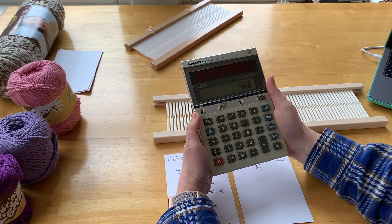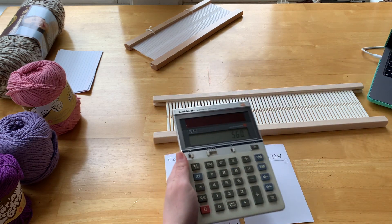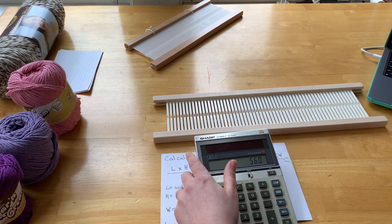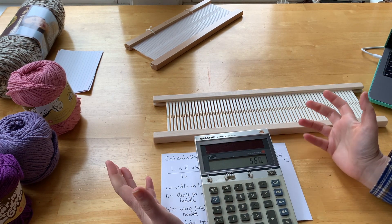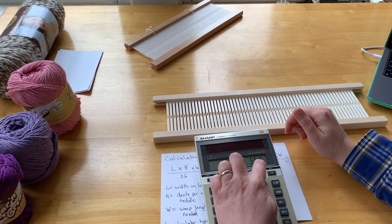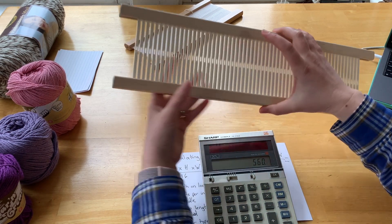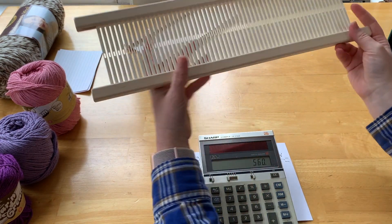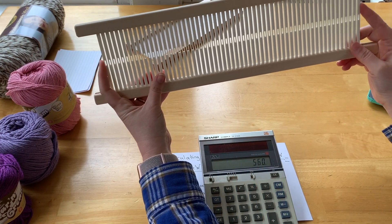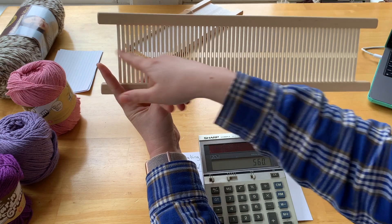So there you have it. Those are the numbers you need to figure out before you start your project. I need 560 yards of yarn, and I'm going to need to warp the entire length of this heddle twice to get my 30 inches.